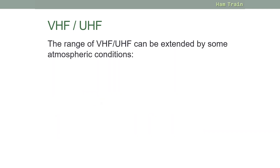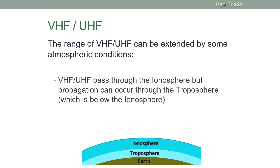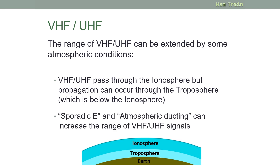The range of VHF and UHF can be extended by some atmospheric conditions. We've mentioned the ionosphere; below that is the troposphere. VHF and UHF signals pass through the ionosphere, but propagation can also occur through the troposphere. Two common effects that can help in amateur radio are called sporadic E and atmospheric ducting — these are ways that VHF and UHF signals can travel further than line of sight, and with them it's quite possible to achieve significant distances.